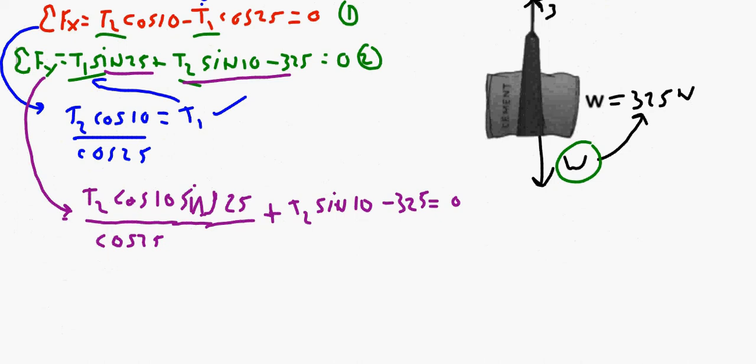So what I can do is I can factor out a T2. If I factor out a T2, this all becomes parentheses and my T2 is going to go on the outside here because I factored it out.